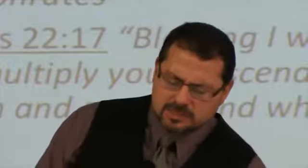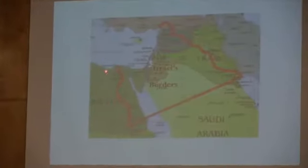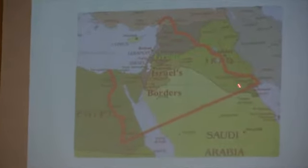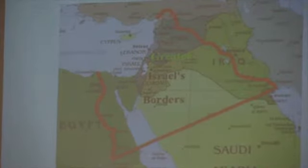But let's look specifically at the promise of land. Reviewing that passage, God promised to Abraham all the land from the river in Egypt — which would be the Nile — to the great river Euphrates. All of this was the promised land that God said he was going to give to Abraham.